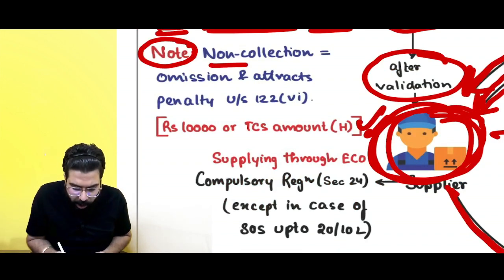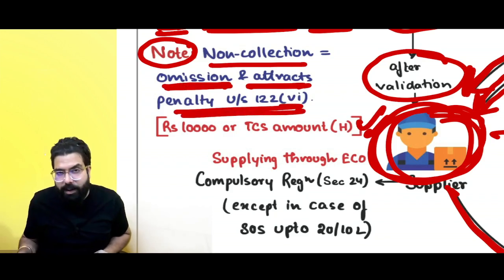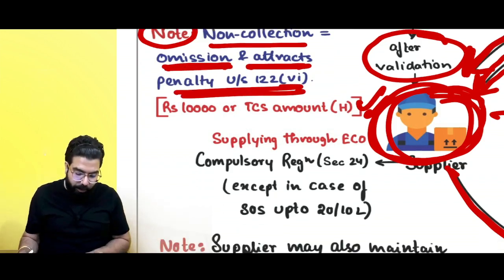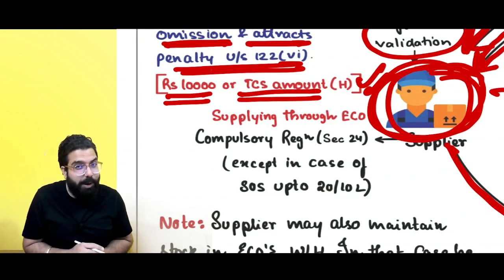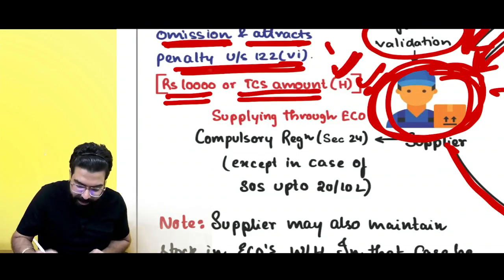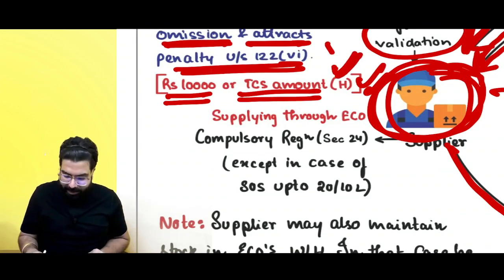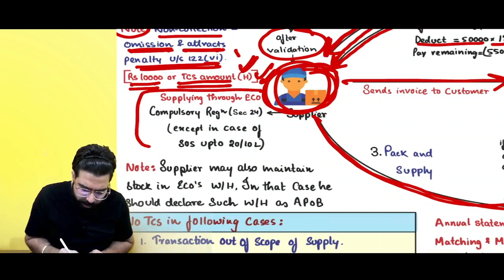What if TCS collection is not done? Non-collection is equal to omission and attracts a penalty under Section 122(6), which says 10,000 rupees or the TCS amount which was not collected, whichever is higher.